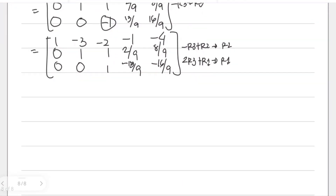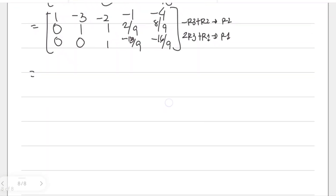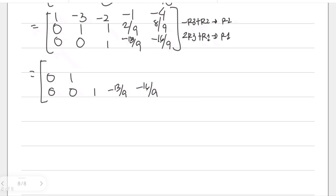Starting from the bottom: row three stays 0, 0, 1, negative 13/9, negative 16/9. For new row two: negative 1 times 1 is negative 1 plus 1, giving 0 in the third column. Negative of negative 13/9 is positive 13/9 plus 2/9, giving 15/9. Negative of negative 16/9 is positive 16/9 plus 8/9, giving 24/9. Row two becomes: 0, 1, 0, 15/9, 24/9.